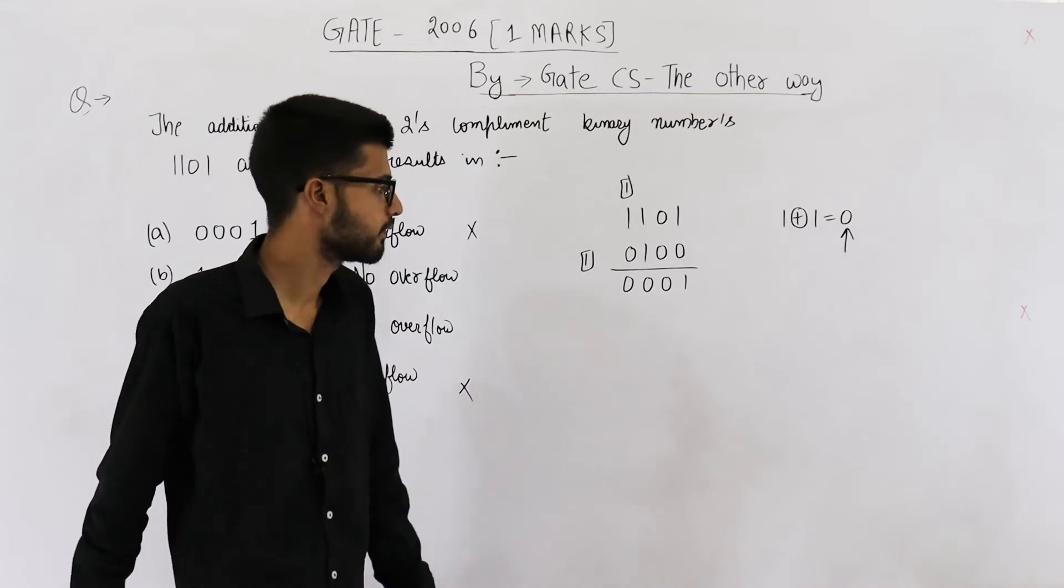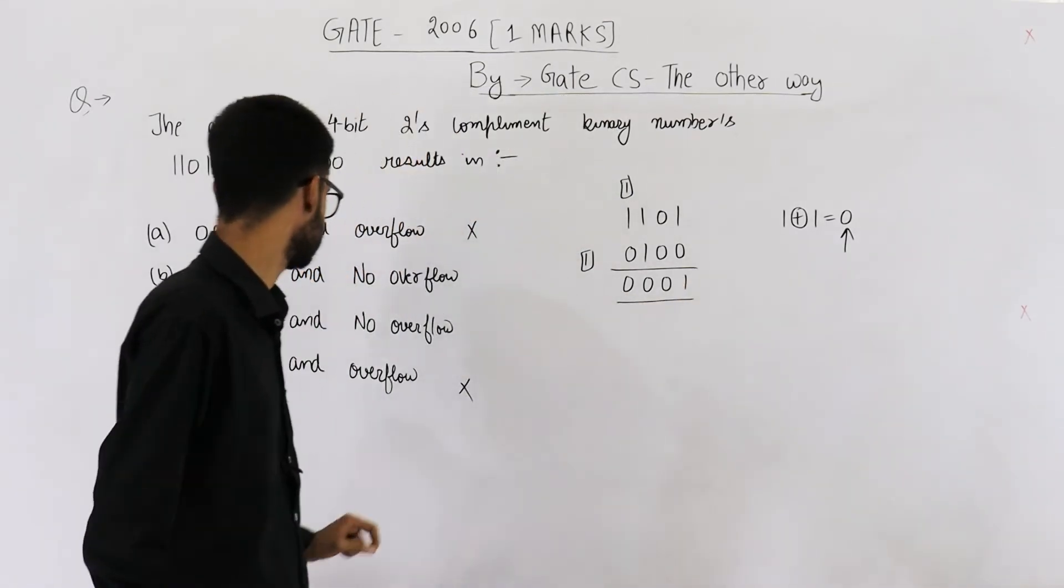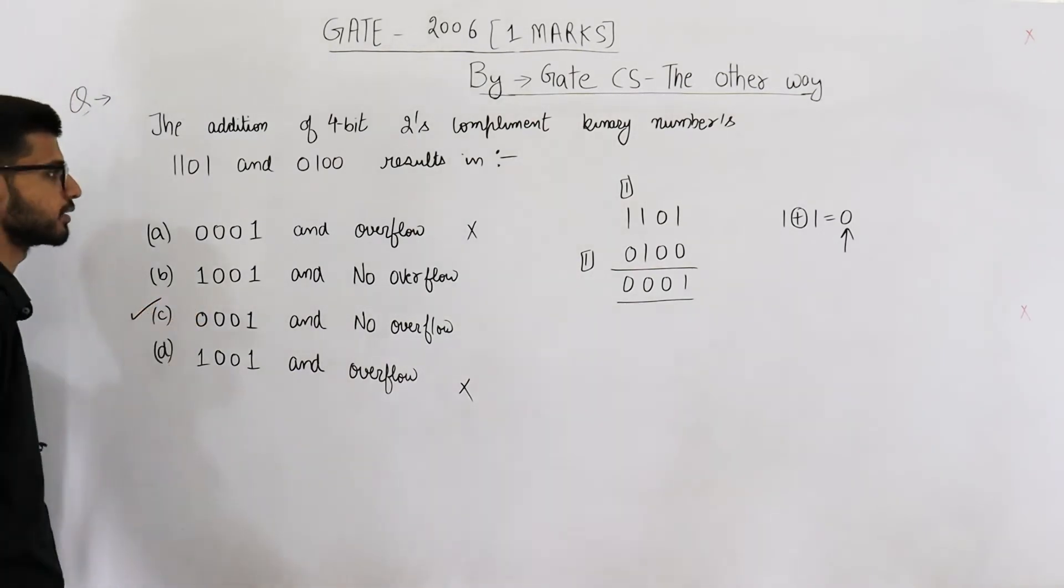So from here also it's clear that we don't have any overflow. And the result is 0001. So option C is your answer.